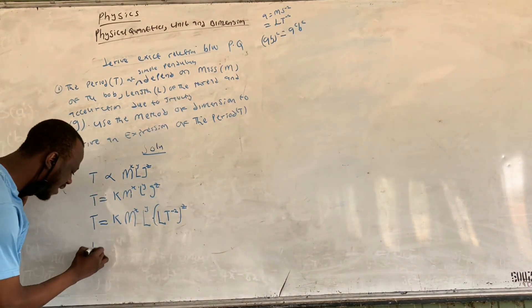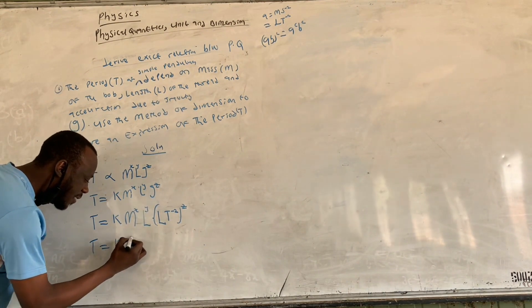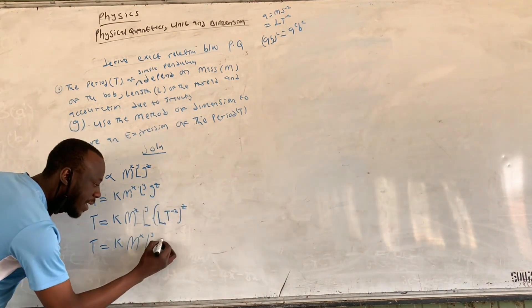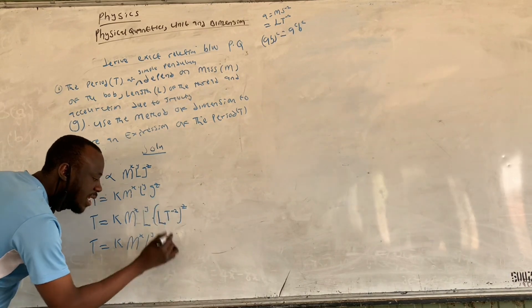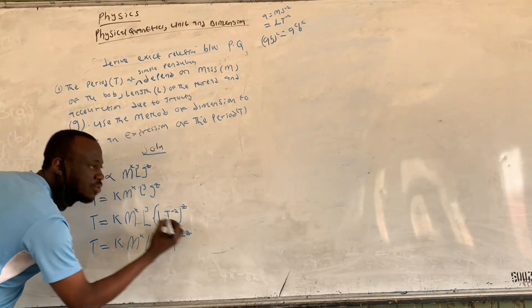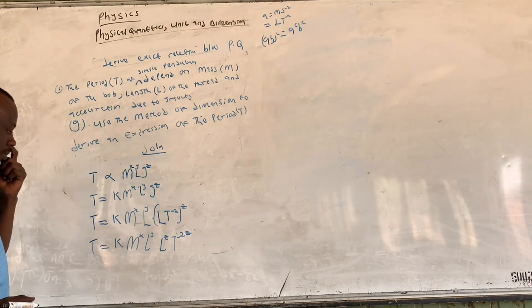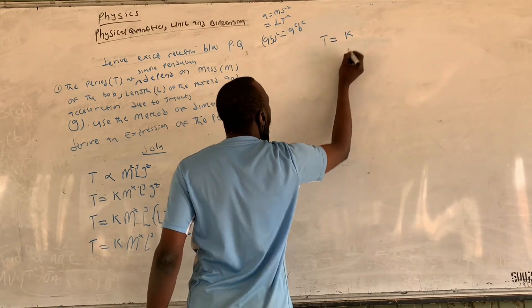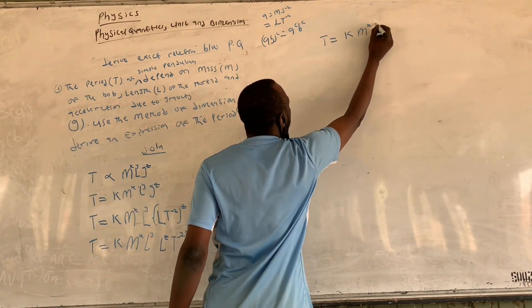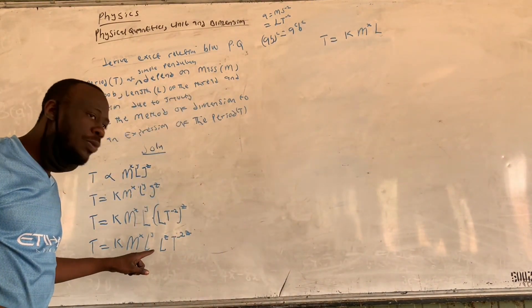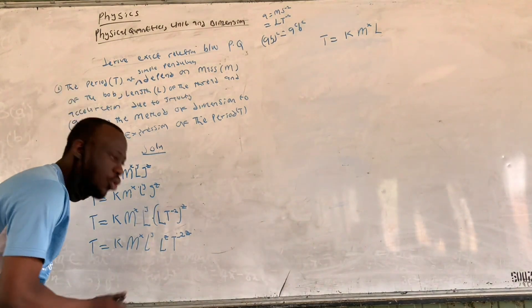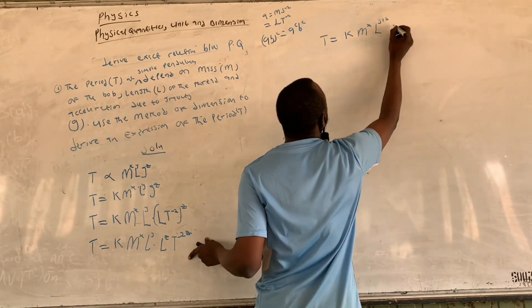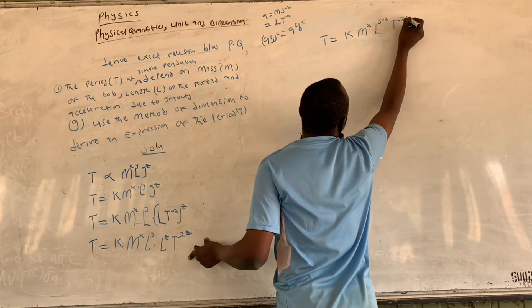We now apply the index law that (a·b)^c = a^c · b^c. So expanding, we have: T equals k times M^x times L^y times L^z times T^(−2z). Since we have two L terms, we combine them using the law of indices by adding their powers, giving: T equals k times M^x times L^(y+z) times T^(−2z).